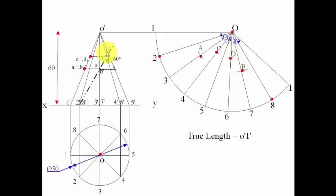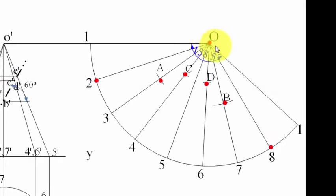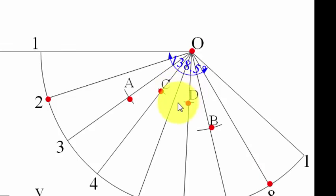Finally, we have this point E dash. E dash is already on a true length. You can take this arc O dash E dash, or you can project it on the true length. Both the arc lengths or both the radiuses are going to be the same. Now, with O as center, you need to put an arc over here. This is going to be your point E.